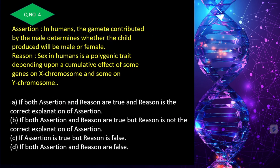In humans, the gamete contributed by the male determines whether the child will be male or female — if X is contributed, the child is female (XX); if Y is contributed, the child is male (XY). That is correct. However, sex in humans is not a polygenic trait depending on cumulative gene effects on X and Y chromosomes — that statement is wrong. So assertion is true and reason is false — answer is C.